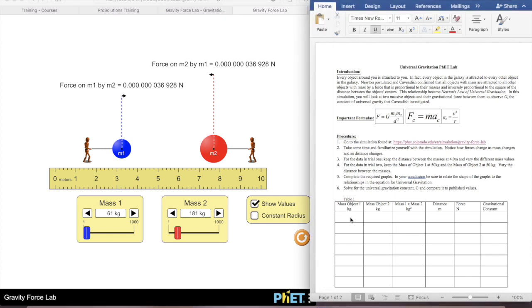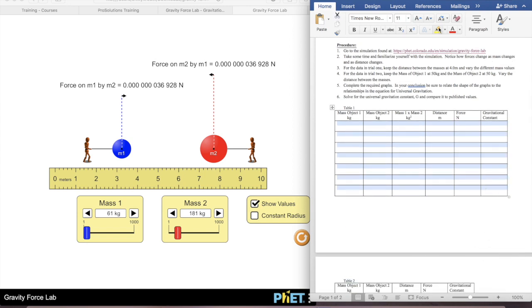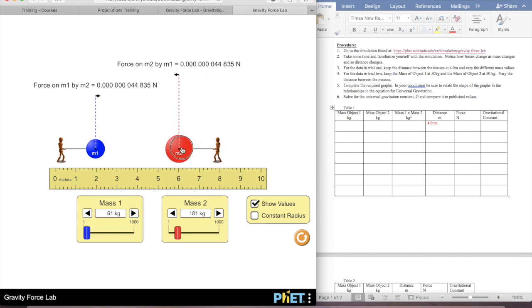So for the data in trial one, we want to keep the distance between the masses at four meters. So I'm going to put 4.0 here. I'm going to put this guy as close as I can to two, I'm going to put this guy as close as I can to six, and so that'll be my four meters.